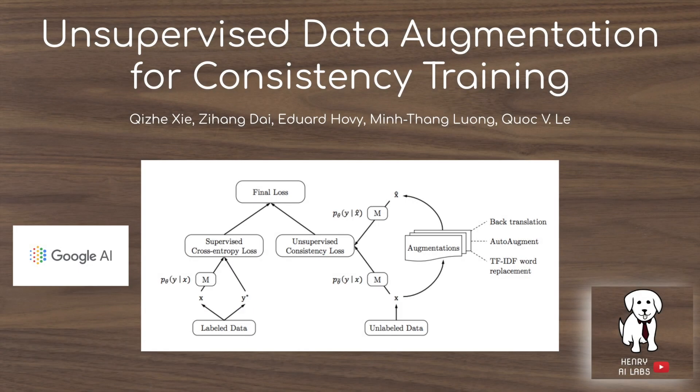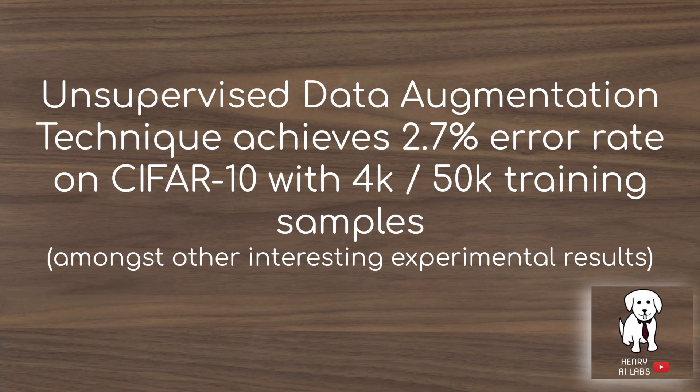This video will explain unsupervised data augmentation for consistency training. One result that I found to be really interesting from this paper is that their technique achieves a 2.7% error rate, which is on par with state-of-the-art results in CIFAR-10, with only 4,000 out of the 50,000 training samples.